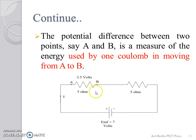Thus, if potential difference between point A and B is 3.5 Volts, it means that each Coulomb will give up an energy of 3.5 Joules in moving from A to B.